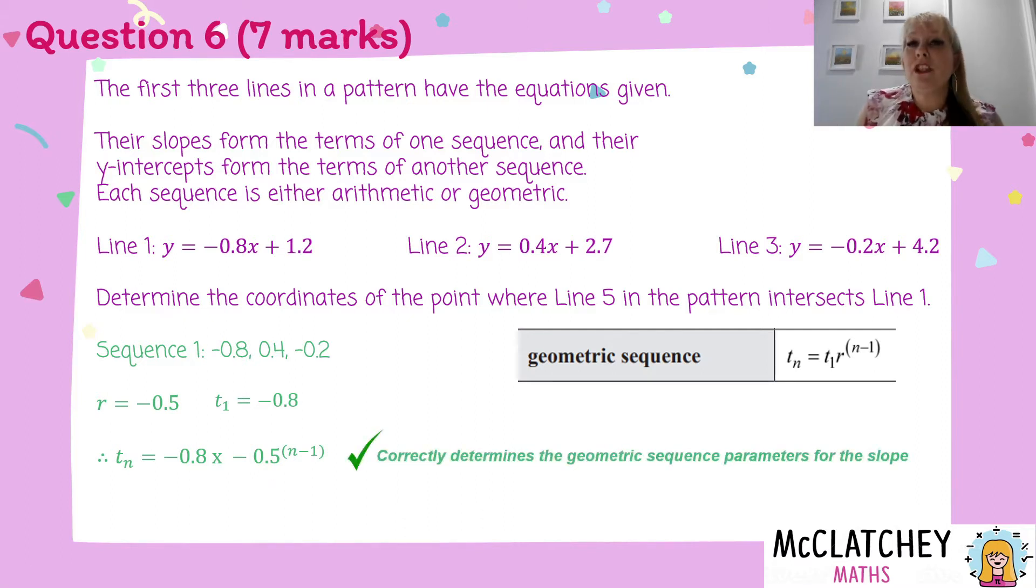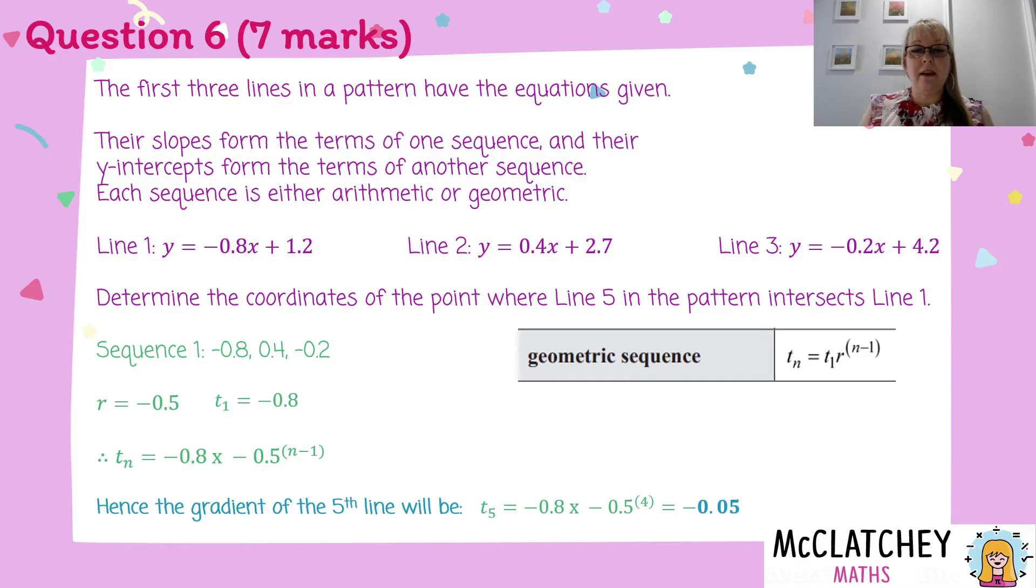We're going to need that later on. Working out that that was a geometric sequence, coming up with the variables of the common ratio and term 1 for that would have given us our first mark. So now that I've worked out this formula, I can actually substitute this part for line 5 to work out the gradient of that fifth line. So if I substitute in the fifth term, n equals 5, I'm going to work out that that is negative 0.05. So I've got my gradient for my fifth line because I know that the gradients are made up of this part of the formula. So that's my next mark.